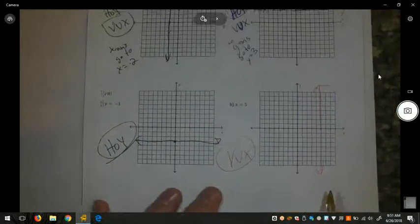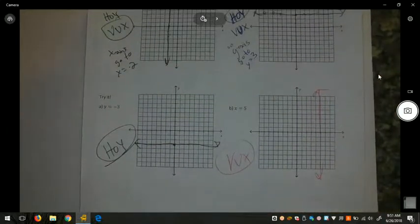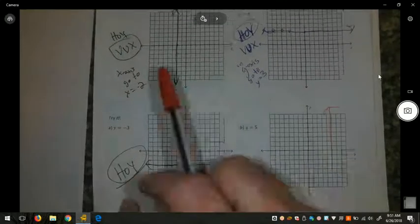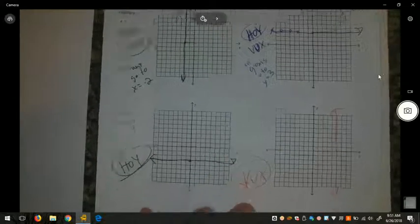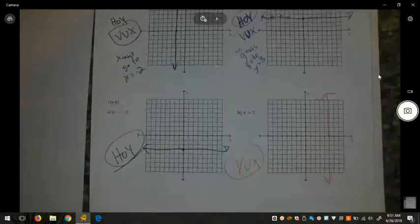These are the two exceptions to how we graph linear equations. Generally, we use slope-intercept form, or x and y-intercepts. But when it's x equals a number, or y equals a number, this expression can help you graph the lines accurately. Have a great day.